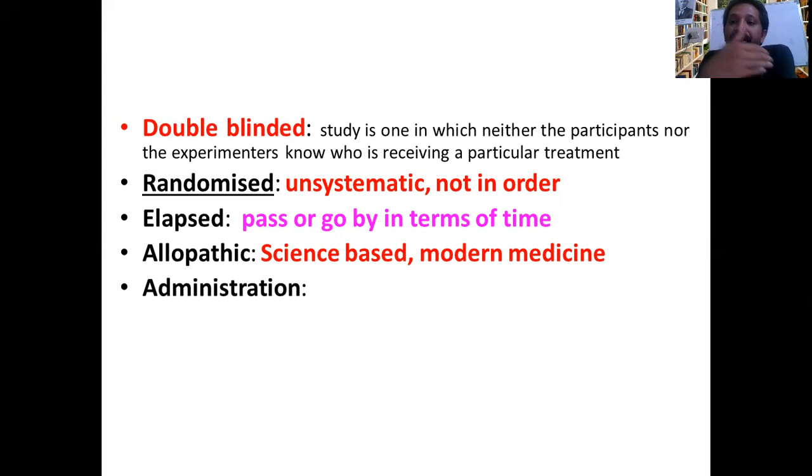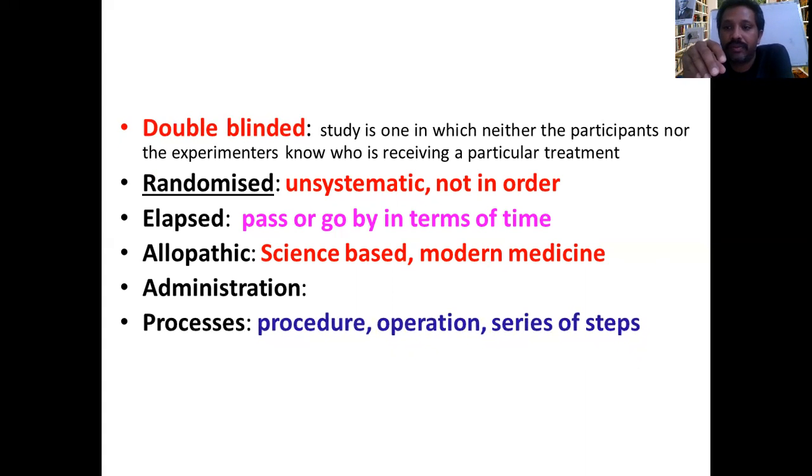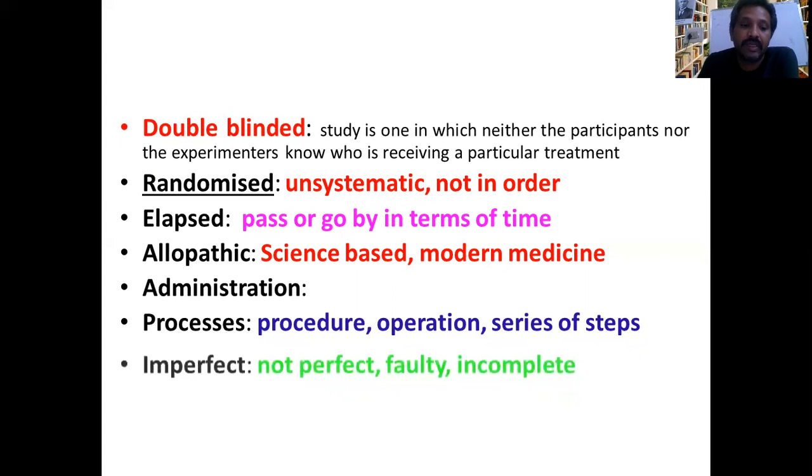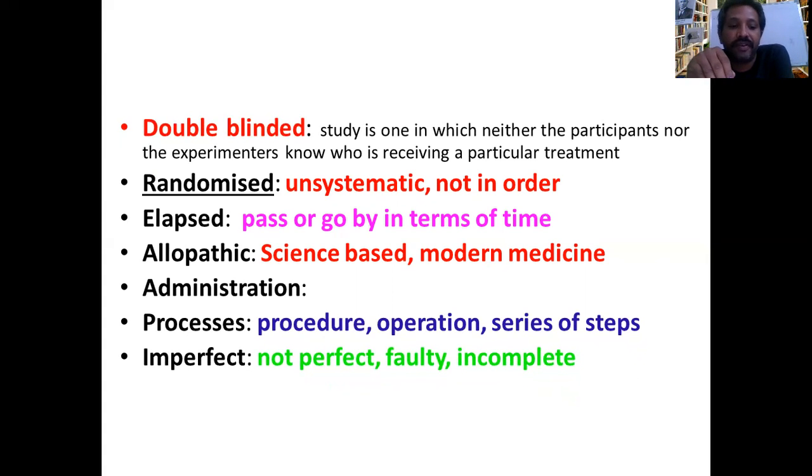Administering means giving the way how they are going to give the drug or vaccine. Suppose if you take an oral vaccine, means through the mouth, administering through the mouth, or muscle, intravenous, intramuscular. These are the different routes of administering the drug or a vaccine. Process means procedure, operation, series of steps, a procedure modality. Imperfect, not perfect, faulty, incomplete.